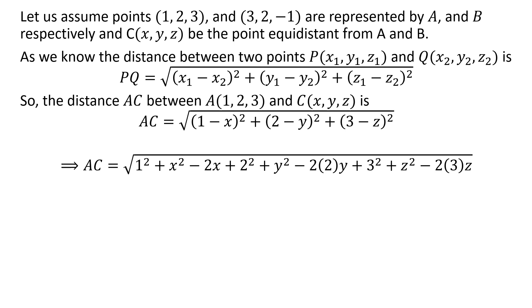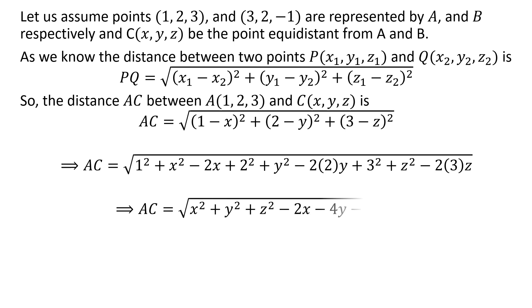Expansion of the square terms gives us: distance AC = √(x² + y² + z² - 2x - 4y - 6z + 14).